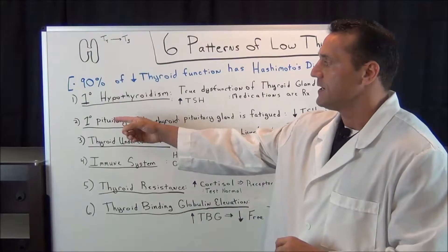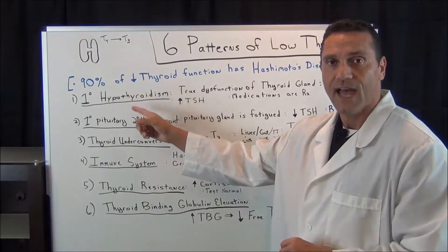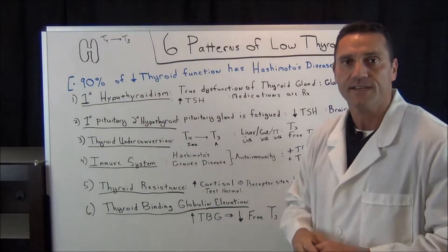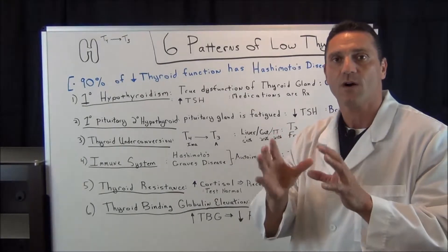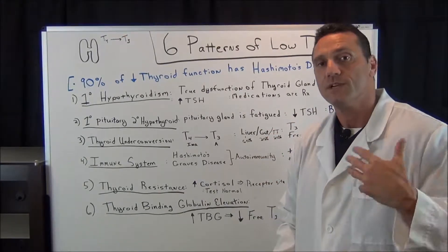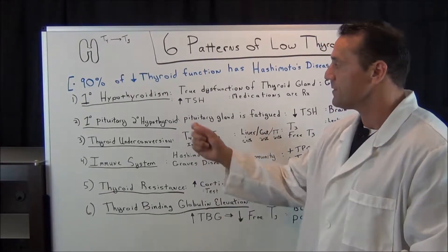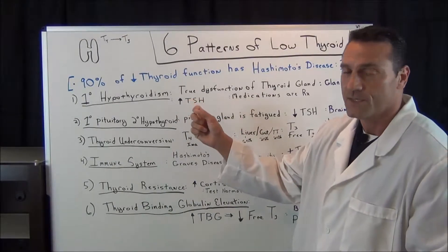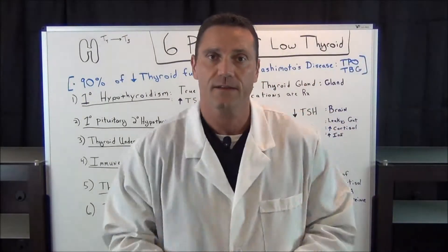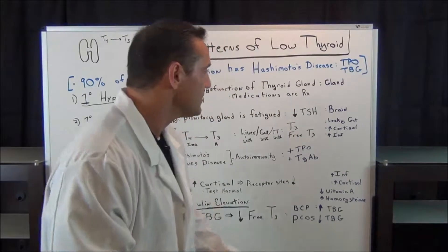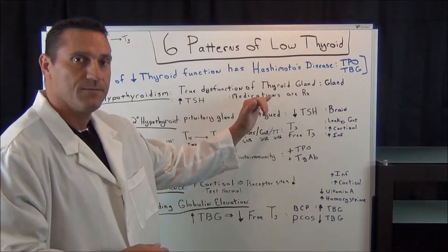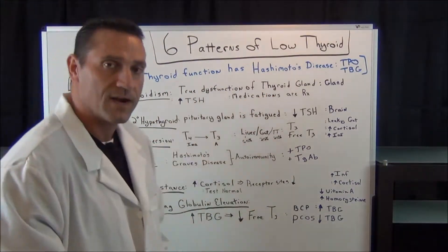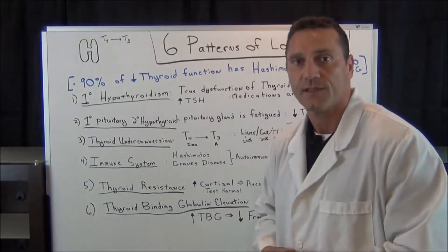To begin with, the first one: primary hypothyroidism. This is the true dysfunction of the thyroid gland — something that's actually wrong with the thyroid gland itself. When you get blood work done, this is when the results show elevated thyroid-stimulating hormone (TSH). This is where doctors will prescribe medications because of the increased TSH count. Something is wrong with your gland.